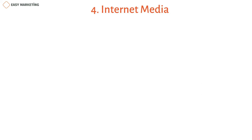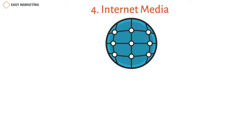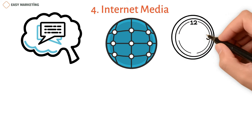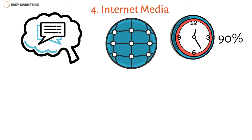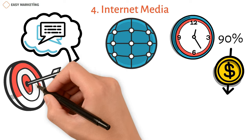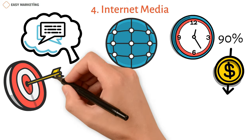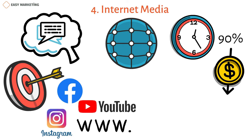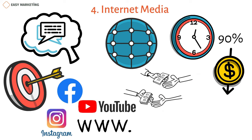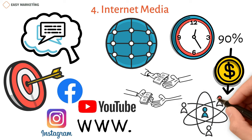Four: online media. Online media are now the most common way for businesses to get their message out. Most people now spend most of their time online — about 90% — and this method is relatively cheap, so it has the most reach. The goal is to sell or promote your goods using platforms like Facebook, Instagram, YouTube, websites, and blogs. You can also pay people with a lot of followers on social media to share your products, reaching a large audience for a small amount of money.